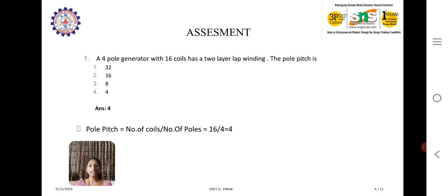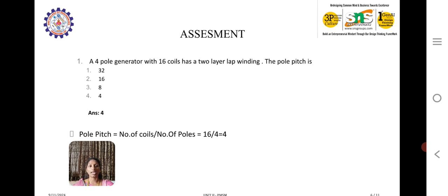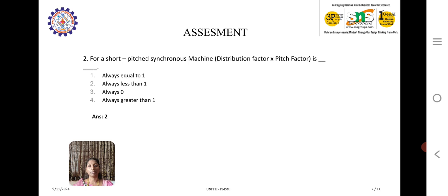Coming to the assessment, let us consider a 4 pole generator with 16 coils and a 2 layer lap winding. What will be the pole pitch value? To calculate the pole pitch, formula is number of coils per number of poles. In the question they have given number of coils is 16, number of poles is 4, so the answer is 4.